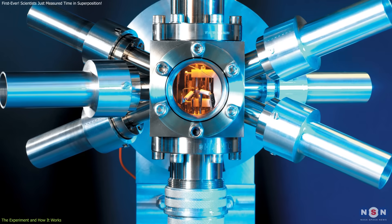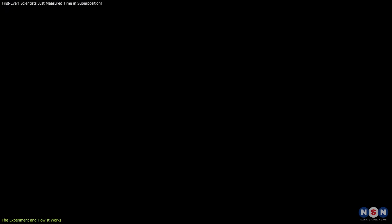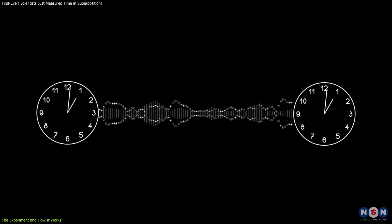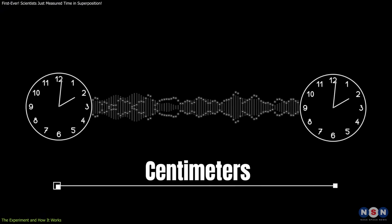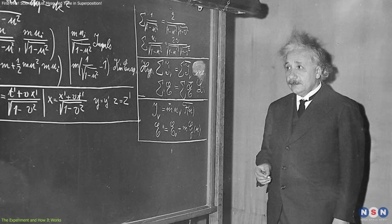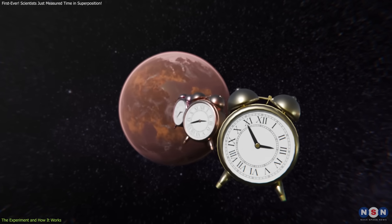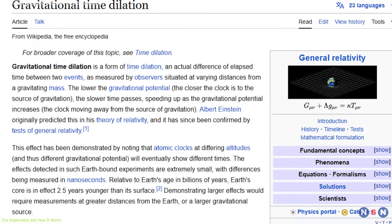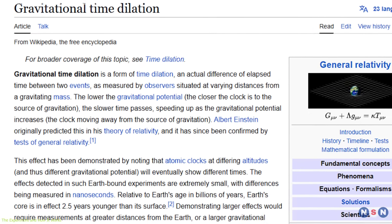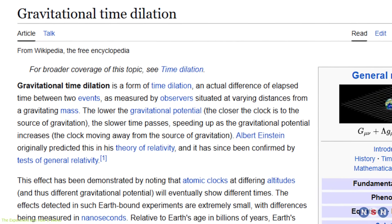Atomic clocks are so sensitive that they can detect how gravity affects the passage of time across just a few centimeters. According to Einstein's general relativity, time moves more slowly the closer you are to a massive object, a phenomenon known as gravitational time dilation, confirmed through numerous experiments.